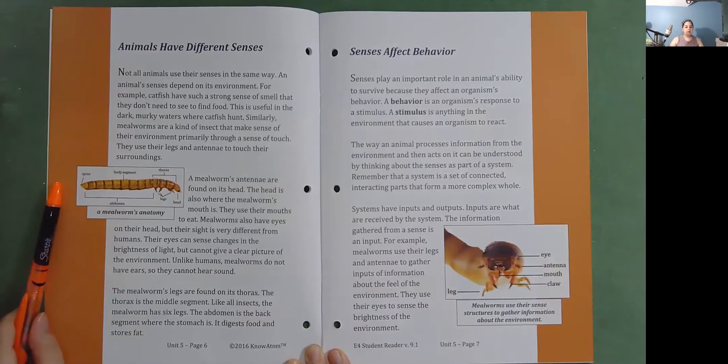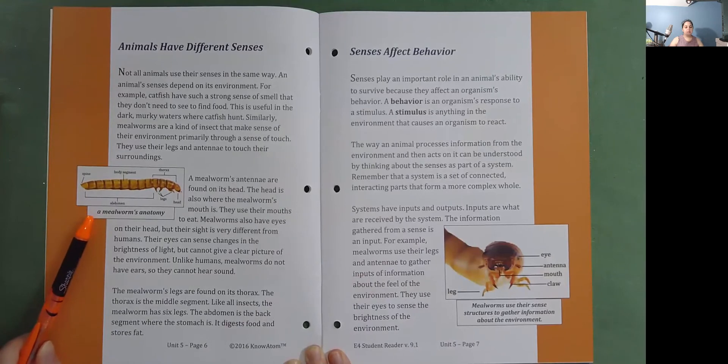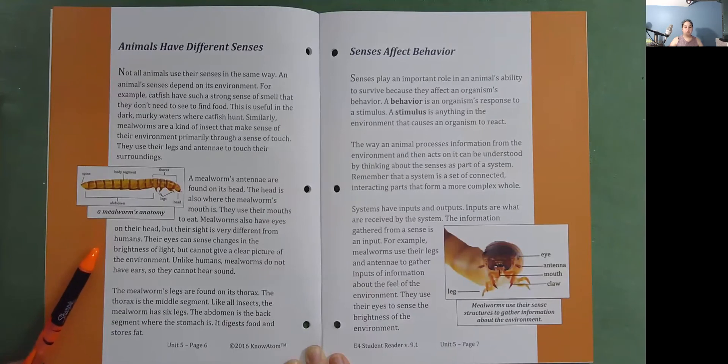A mealworm's antennae are found on its head. The head is also where the mealworm's mouth is. They use their mouths to eat. Mealworms also have eyes on their head, but their sight is very different from humans. Their eyes can sense changes in the brightness of light, but cannot give a clear picture of the environment. Unlike humans, mealworms do not have ears, so they cannot hear sound.